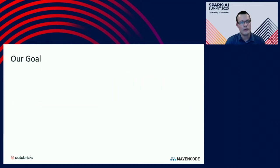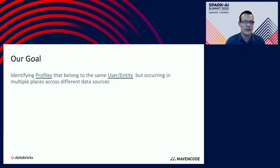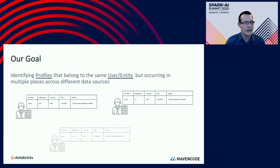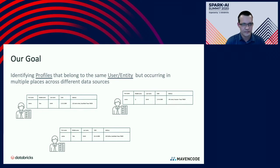With that out of the way, what we'd first like to do is really just define our goal and the problem we're trying to solve. That goal is to identify profiles or records that belong to the same user entity, but may be occurring in multiple places or across multiple data sources. We've listed here three records that may exist in different database systems — they may be matching, they may be duplicates, they may not be. The idea is to match and link those records together and to deduplicate any duplicates that may be occurring.